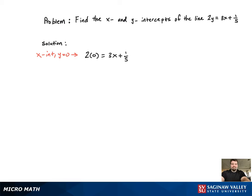So we're going to subtract 1 fifth to the other side. Divide by 3. And that's going to correspond to the point negative 1 fifteenth comma 0.